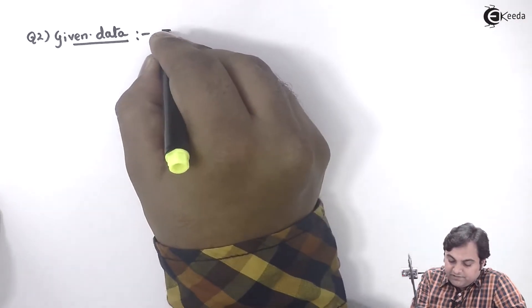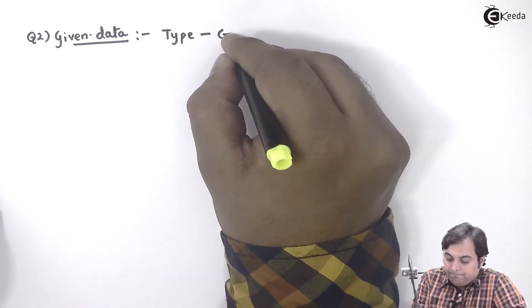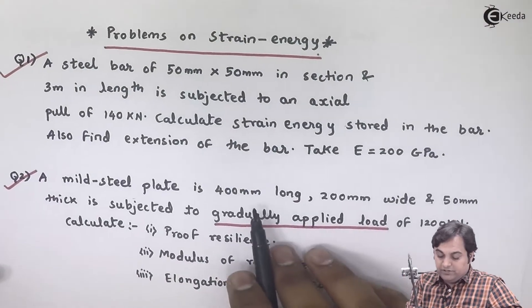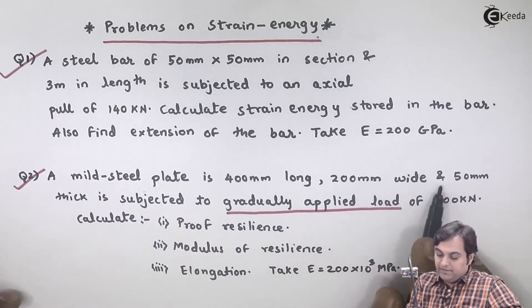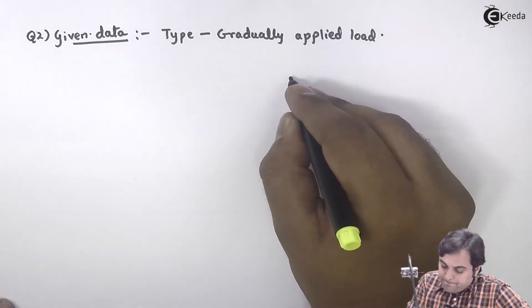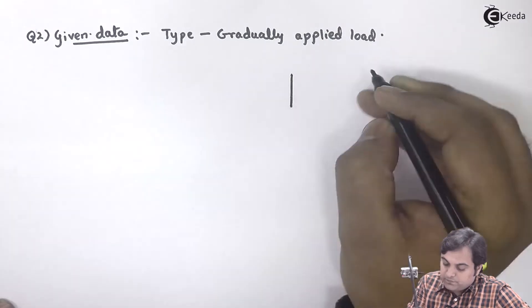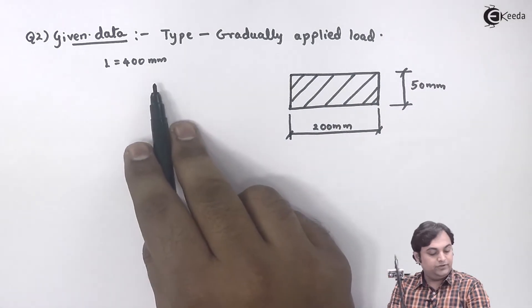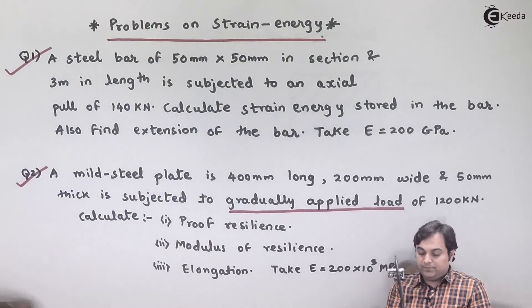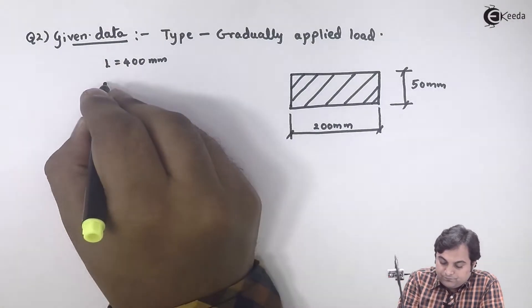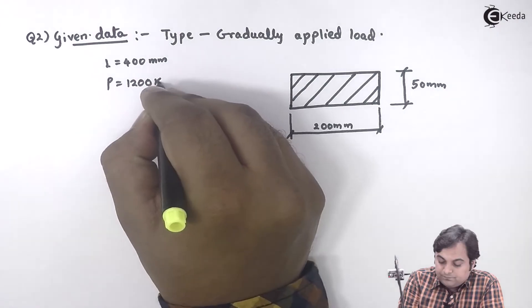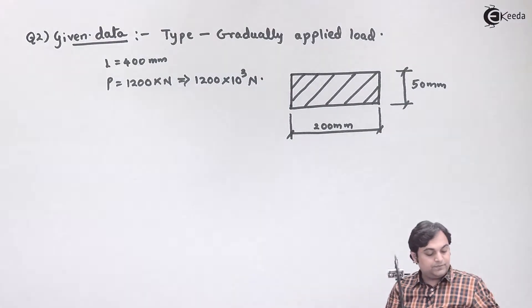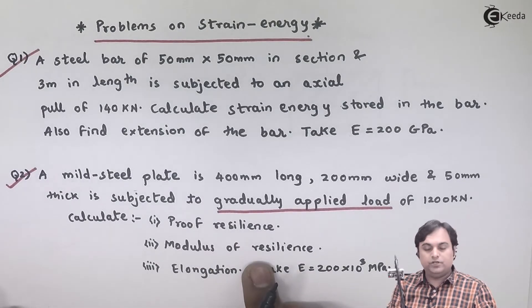Writing the data for this question: the load is applied gradually. The mild steel plate is 400 mm long and the cross-section is 200 mm × 50 mm. It is subjected to a gradually applied load of 1200 kilo Newton, which is 1200 × 10³ Newton.